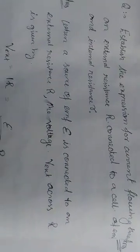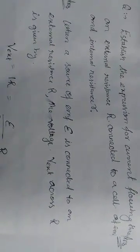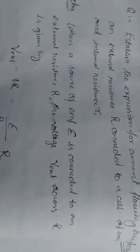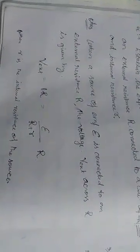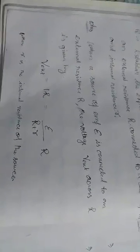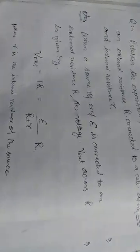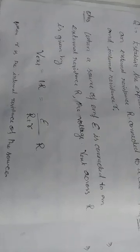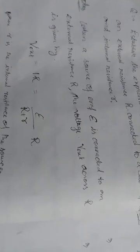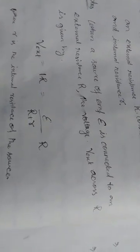Establish the expression for current flowing through an external resistance R connected to a cell of EMF E and internal resistance r. When a source of EMF E is connected to external resistance R, the voltage V external across the resistance R is given by V = IR. Current I is equal to E divided by R plus r, where r is the internal resistance of the source.